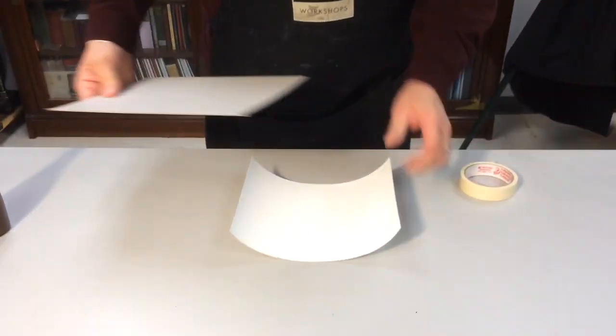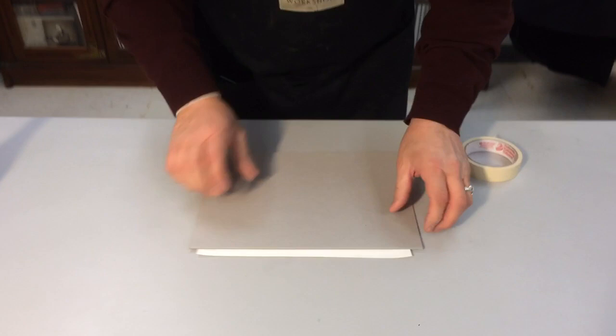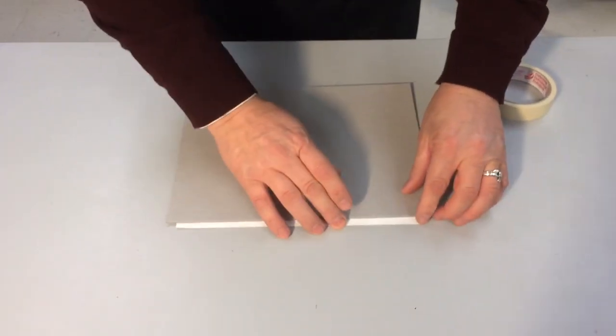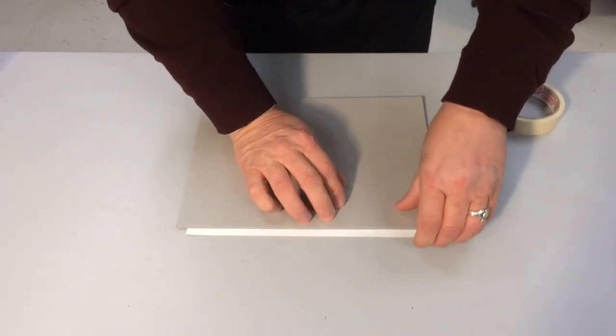First thing to do is to fold up the edges of the paper. So we're going to use a little guide for this, a little cardboard guide.